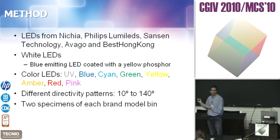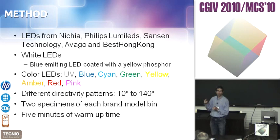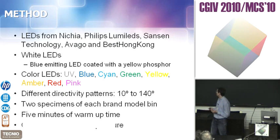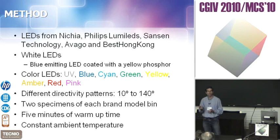If you buy LEDs from different bins, the color you get will be different. We also always allowed five minutes of warm-up. Our experiments indicated that with five minutes the maximum color difference is 0.2 delta E; if you allow ten minutes, it's 0.1. Since we measured a lot of LEDs, we used five minutes as good enough for stability. Also, while taking measurements, the ambient temperature was kept constant, which is very important because LEDs change their behavior and color output with ambient temperature.